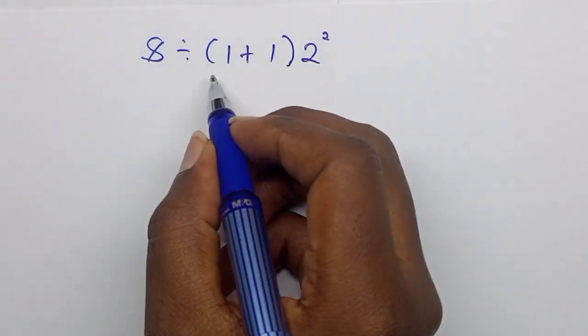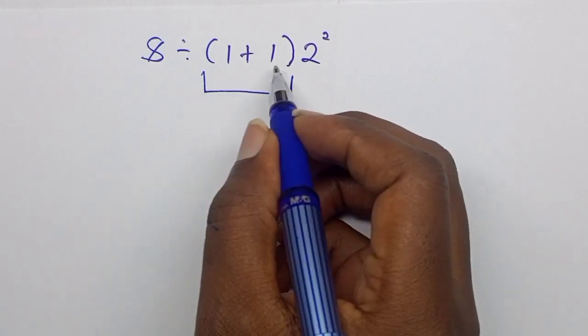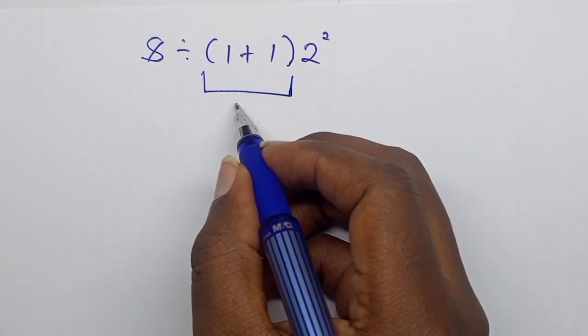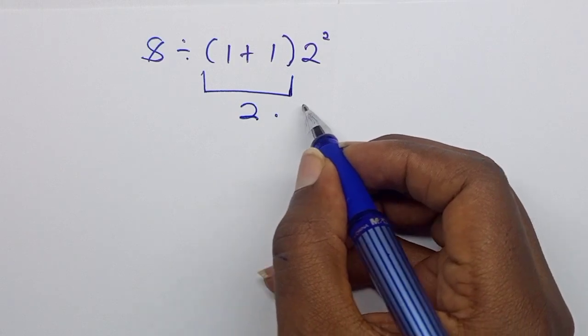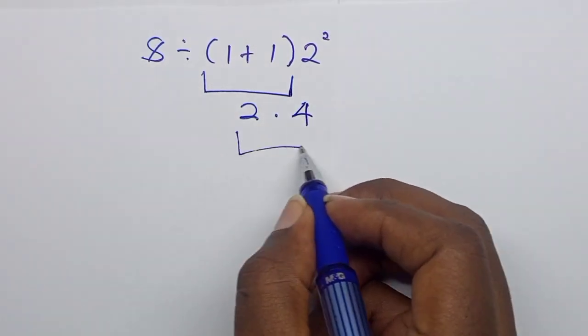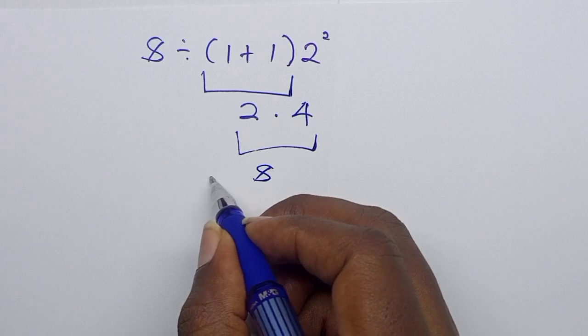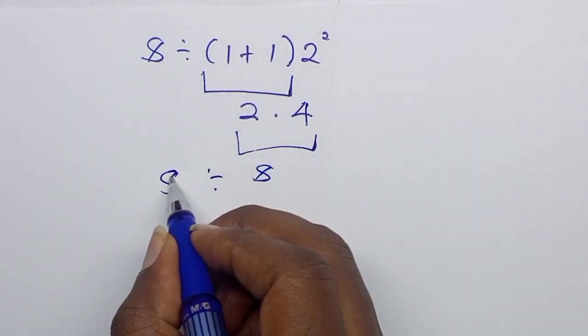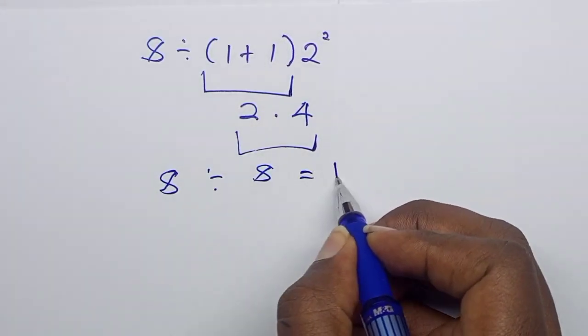So when you get 1 plus 1, 1 plus 1 is 2. So we multiply by, then 2 squared is 4. So multiply 2 by 4 you get 8. We said now divide by 8. 8 divided by 8 equals 1.